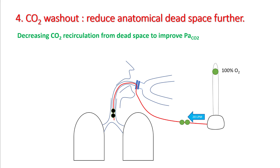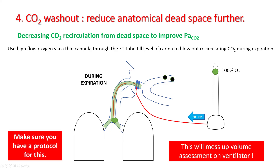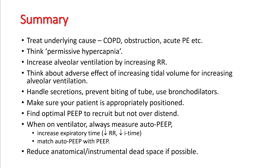Another technique you can use is called CO2 washout. You put a high-flow cannula via the ET tube to the level of the carina, and when you give oxygen through this tube, the oxygen replaces the CO2 in the endotracheal tube and upper airways. When you re-breathe, you are not breathing recirculated carbon dioxide, reducing your PaCO2 and effectively reducing anatomical and instrumental dead space. This is complicated — it can affect volume assessment on the ventilator — so make sure it is done by experts and that you have a protocol. It is a very rarely used technique.